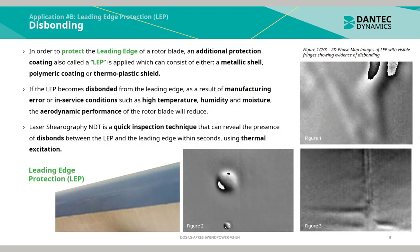Disbonding of the leading edge protection or LEP: in order to protect the leading edge of a rotor blade, an additional protection coating also called an LEP is applied, which can consist of either a metallic shell, polymeric coating, or thermoplastic shield. If the LEP becomes disbonded from the leading edge as a result of manufacturing error or in-service conditions such as high temperature, humidity, and moisture, the aerodynamic performance of the rotor blade will reduce. Laser shearography NDT is a quick inspection technique that can reveal the presence of disbonds between the LEP and the leading edge within seconds using thermal excitation.